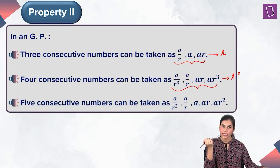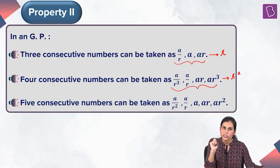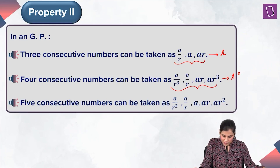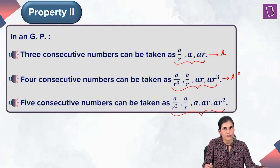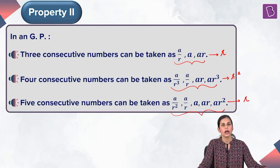Similarly, if you want to select five terms in GP, the most convenient way is to choose them as A/R², A/R, A, AR, and AR², in which case this sequence of five terms will be a GP with common ratio R.